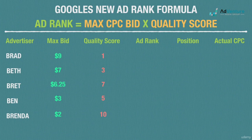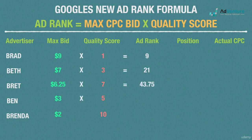Now let's calculate the respective ad ranks to determine position. We get ad rank by multiplying the max bid by quality score. Brad's ad rank is 9, Beth's is 21, Brett's ad rank is 43.75, Ben has an ad rank of 15, and Brenda has an ad rank of 20.